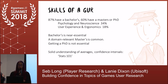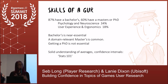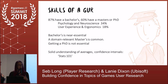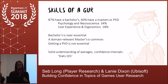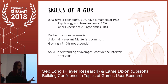We get a lot of questions about the backgrounds and skills a junior user researcher may need. Based on our 2017 salary survey data, 87% of GURs in our community have a bachelor's, and 60% have a master's or PhD. Within that, 34% have a psychology or neuroscience background and 18% come from a UX and ergonomics background. While getting a PhD is not essential, a bachelor's is near essential, and a domain-relevant master's is extremely common.